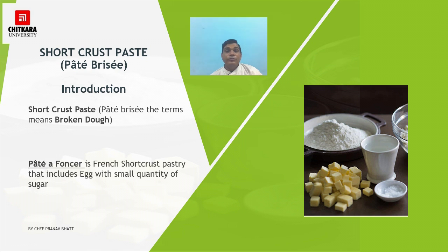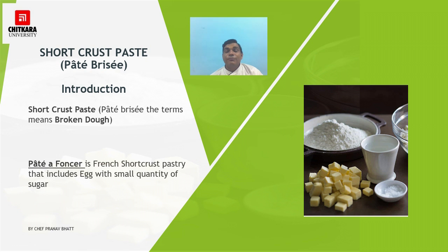The dough is made ensuring no gluten is developed — we don't want gluten development, and the crumbling texture must be preserved. There is also a French variant called pâte à foncer. In this paste, egg and a small quantity of sugar are included, whereas in the basic short crust paste we don't add egg or sugar — just butter and pastry flour, along with a little water to bind the texture.